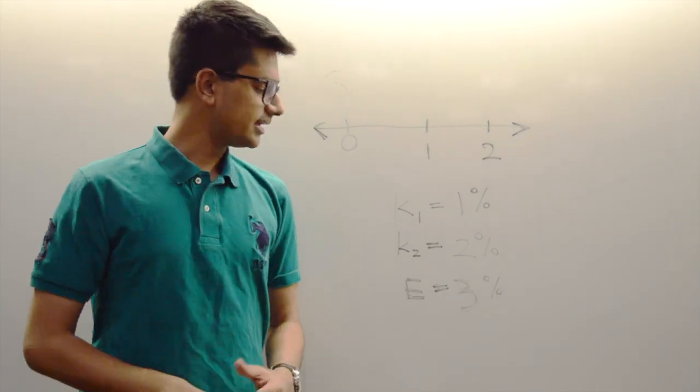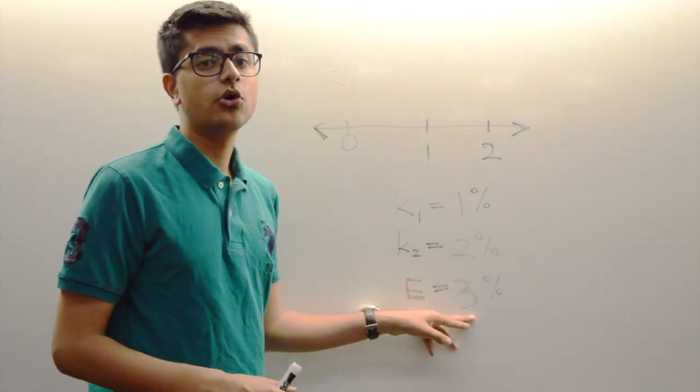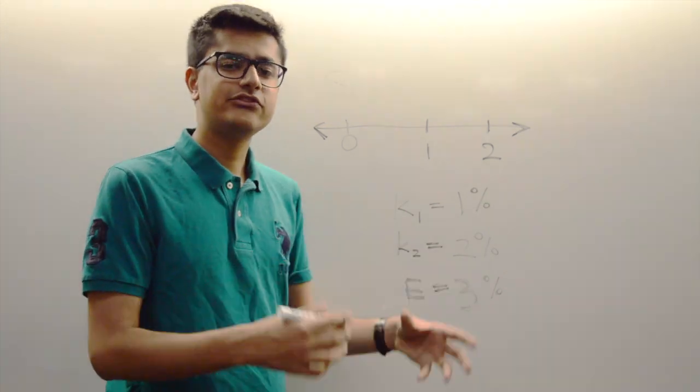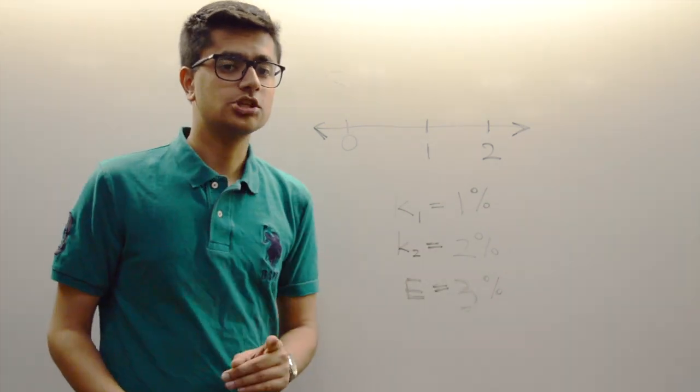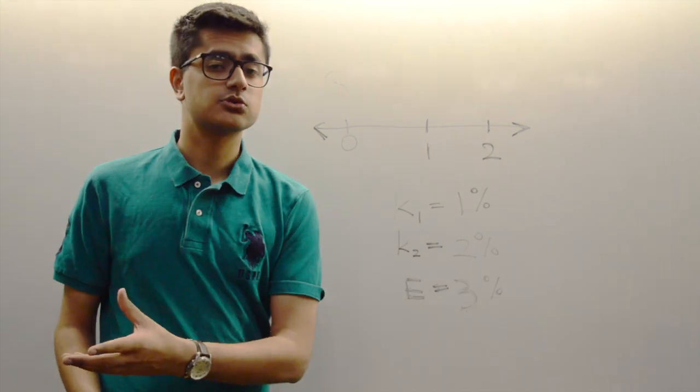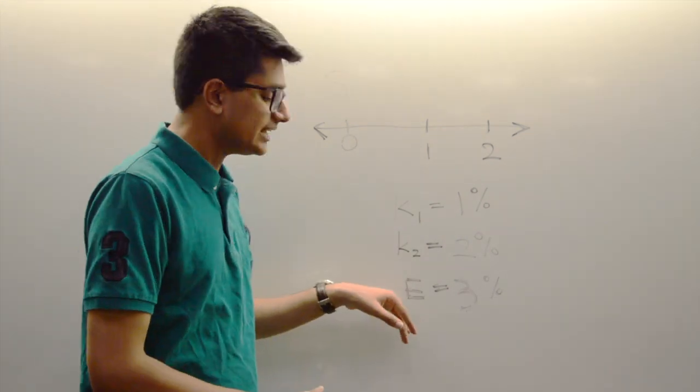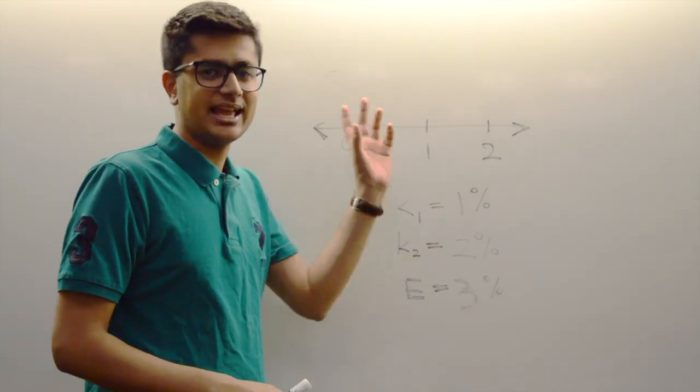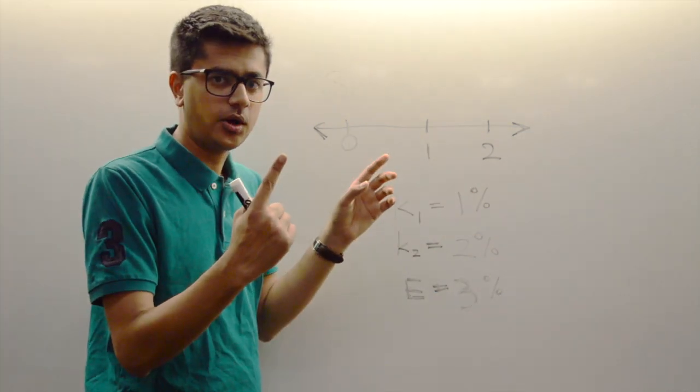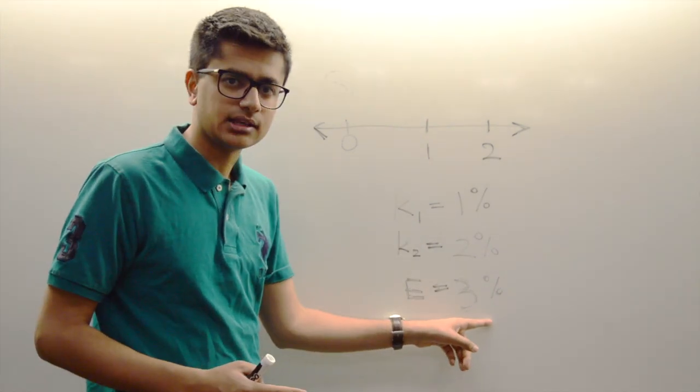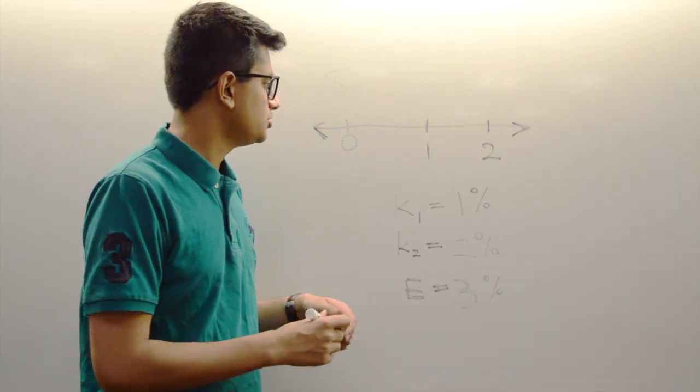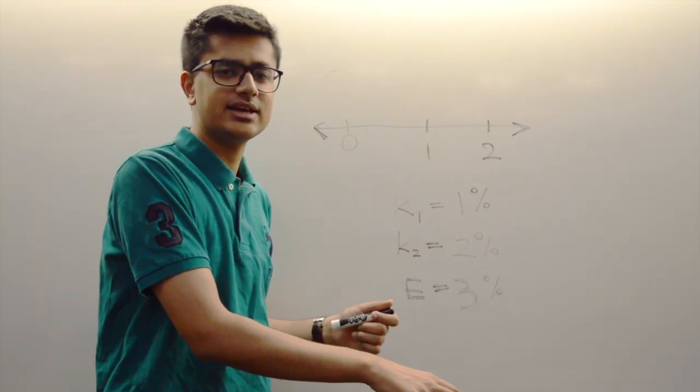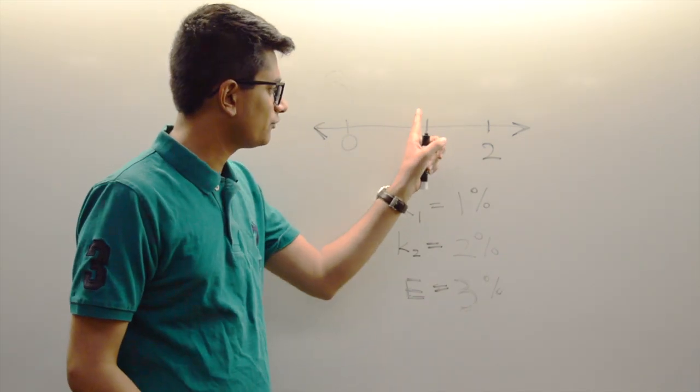But as of right now, we don't know what that is. So we let it be E, or the expected future spot rate one year from now. This terminology is important because that's what's used in the textbook. So E represents the one-year spot rate one year from now. At the end of one year, the one-year spot rate then will be 3%. You can take your money and invest it at 3% for one more year.